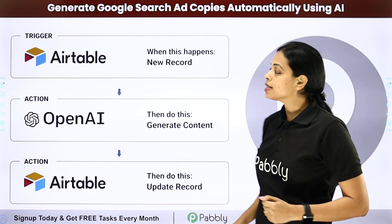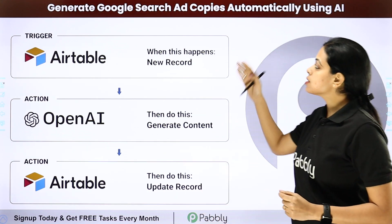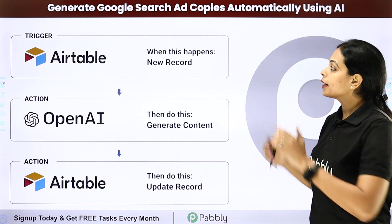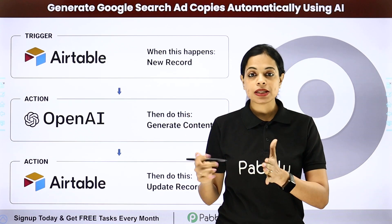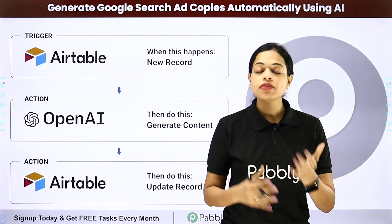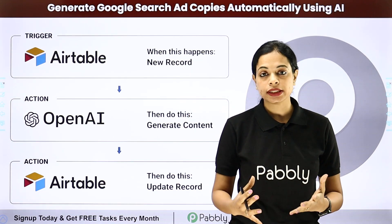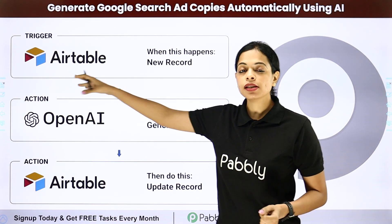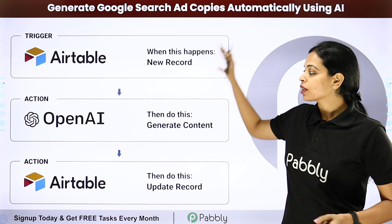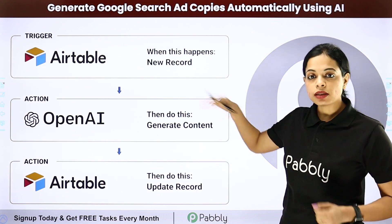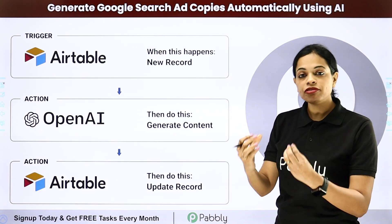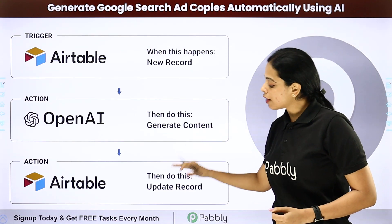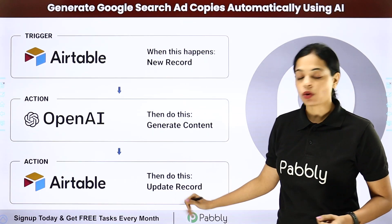Another example is to generate Google search ad copies automatically using AI. Google search ad copies is a very time-consuming activity when you have to find and create content. Similarly, we have a spreadsheet here — Airtable — where the titles are there, like the product name or the product information. With that, you create the content and then update your Airtable records.